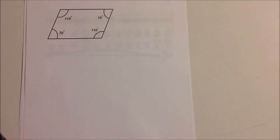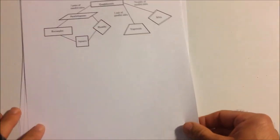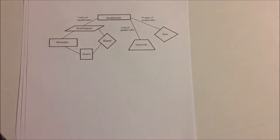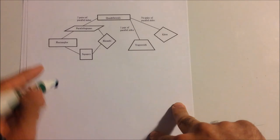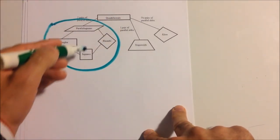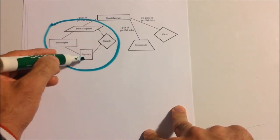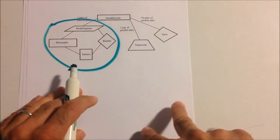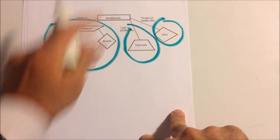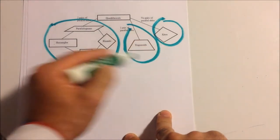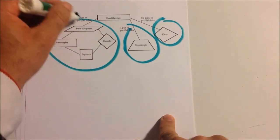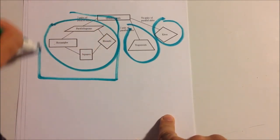With quadrilaterals on top — remember, quadrilaterals have four sides — we have the parallelogram set, which includes the rhombi (plural for rhombus), squares, and rectangles. Then we have the trapezoid set and the kite set. We talked about in the last video how sometimes a kite could be a rhombus or a square. We'll focus on the hierarchy dealing with parallelograms.